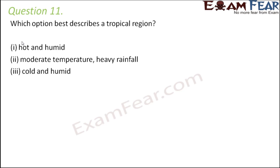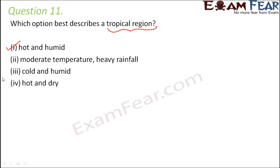Question number eleven: which option best describes a tropical region — hot and humid, moderate temperature, heavy rainfall, cold and humid, or hot and dry? Tropical regions are located near the equator, so they are definitely not cold. They are hot and humid — high temperatures mean hot conditions, and rainfall creates a humid atmosphere. That is why tropical regions are more suitable for a large variety of animals.